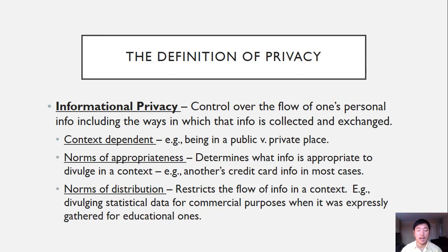Privacy has several important features. One is being context dependent. The kind of context you're in determines whether or not your privacy has been violated. For example, if you're in a public place such as a library with open computer rooms and you're surfing the internet, and someone walking by looks at your screen and sees what email you're writing — which could contain personal information — in that context, your privacy has not been violated.